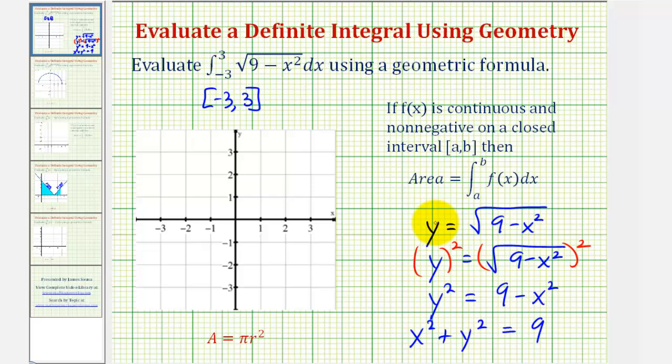But remember, since y is non-negative, we're only going to sketch the circle in the first and second quadrants where y is positive.